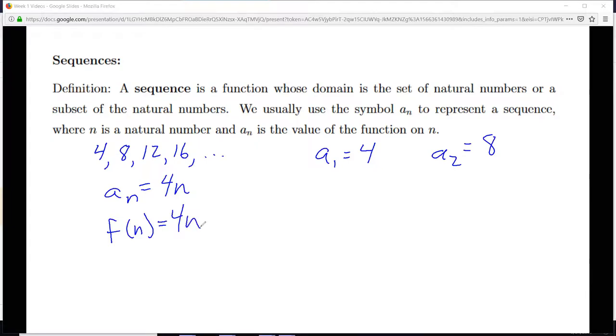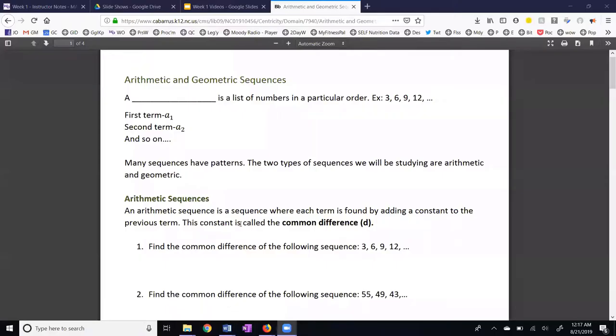Or, oftentimes with function notation, we use x as our dummy variable. This is the same function. Typically, with function notation, we do allow decimal inputs, like maybe 1 half. F of 1 half would be 4 times 1 half, which is 2. In the case of a sequence, we do not allow decimal or fractional inputs, but only the whole numbers.